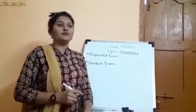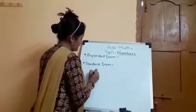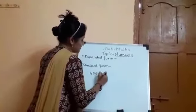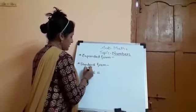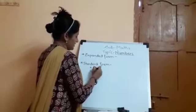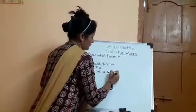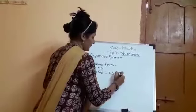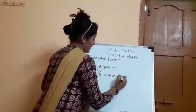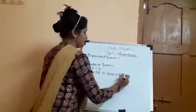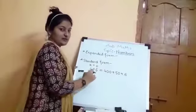Expanded Form is the addition of place value of each digit in the given number. For example, if you have a number 456, the expanded form is written by noting the place values of each digit. The place value of 4 is 400, plus the place value of 5 is 50 because it is at the 10's place, plus 6 is at the 1's place so 6 remains as it is.